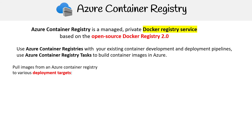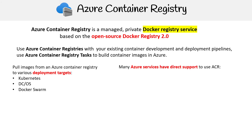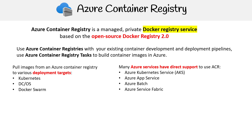You can pull images from your container registry to various deployment targets like Kubernetes, DC/OS (which is basically an operating system for containers), and Docker Swarm. There are also many Azure services that directly support ACR, such as AKS, Azure App Service, Azure Batch, Azure Service Fabric, and a lot more. It's just a matter of saying 'use this from ACR' and it works right away.